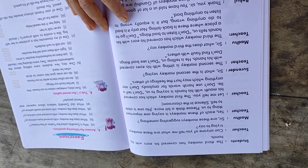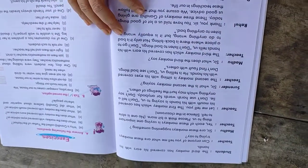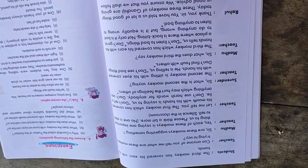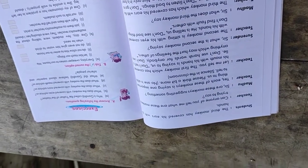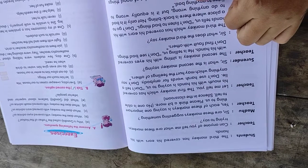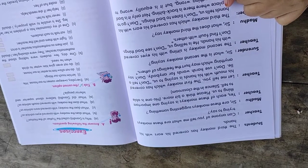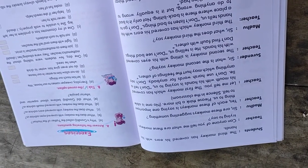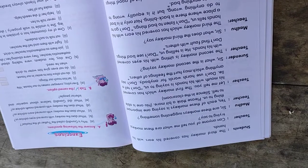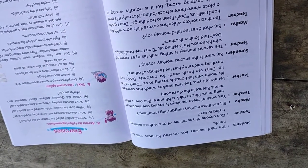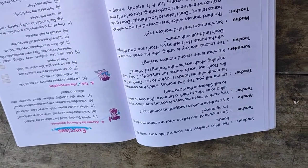Teacher asks, can any one of you tell me what are these monkeys trying to say? Madhu asks, Sir, are these monkeys suggesting something? Teacher says, yes, each of these monkeys is saying one important thing to us. Please think a bit more. No one is able to tell. Silence in the classroom.